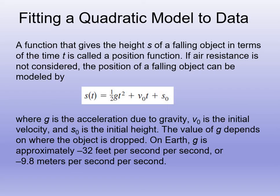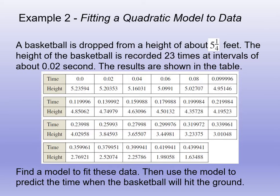Make sure that you're in the right units. On Earth, gravity is negative 32 feet per second per second, or we use negative 9.81 meters per second squared. Make sure you're using the right value. If it's in feet, use negative 32. If it's in meters, use negative 9.8. So an example, the basketball is dropped from a height of about 5.25 feet. The height is recorded 23 times at intervals of about 0.02 seconds.